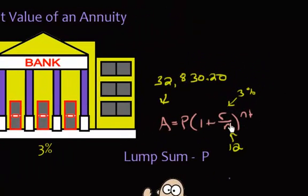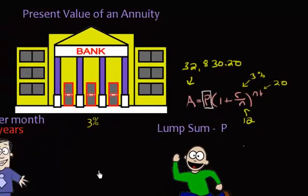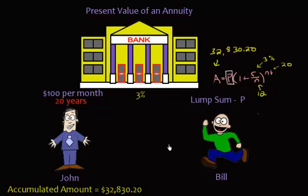So I'll just write 3%. Here, N is 12, compounded monthly. And then T is 20, 20 years. So the only thing that I need to figure out, the thing that I'm trying to solve for, is P right here. So let me write that down over here. So let's move John and Bill.